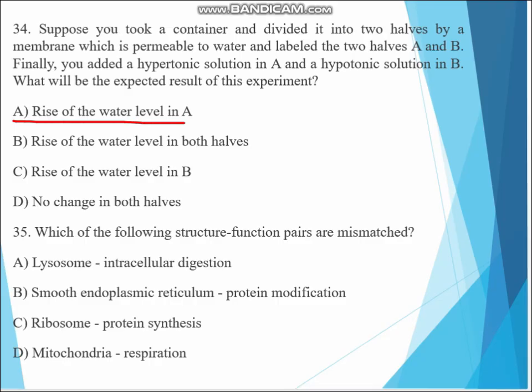Question 35. Which of the following structure-function pairs are mismatched? A. Lysosomes - intracellular digestion, B. Smooth endoplasmic reticulum - protein modification, C. Ribosome - protein synthesis, D. Mitochondria - respiration. The answer must be B, smooth endoplasmic reticulum. Protein modification is the answer B.